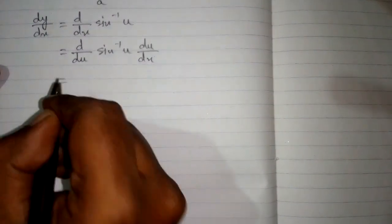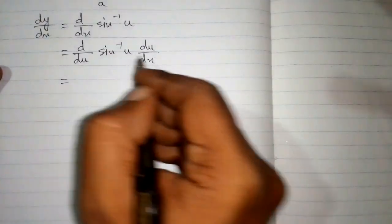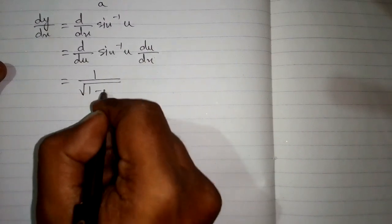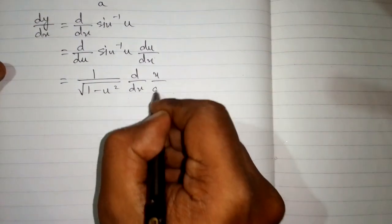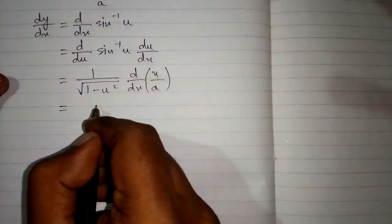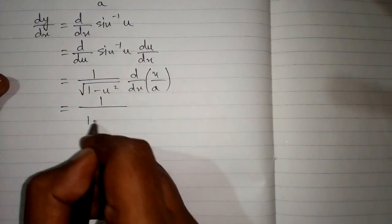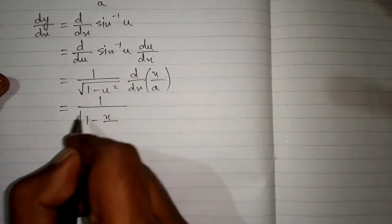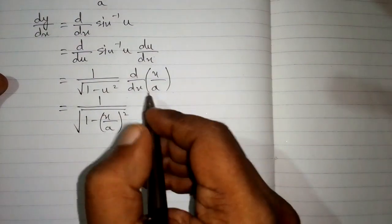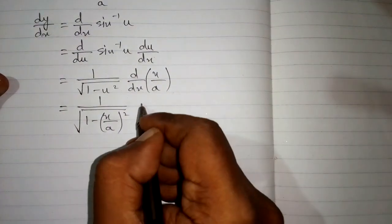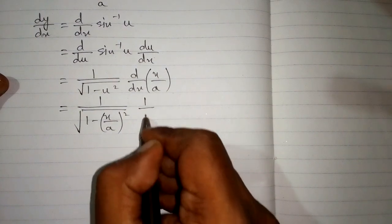Now we can apply the formula: the derivative of inverse sine of u is 1 upon square root of 1 minus u square, multiplied by the derivative of x upon a. We put the value of u, which is x upon a, so we have square root of 1 minus x upon a whole square, and the derivative of x upon a is 1 upon a.